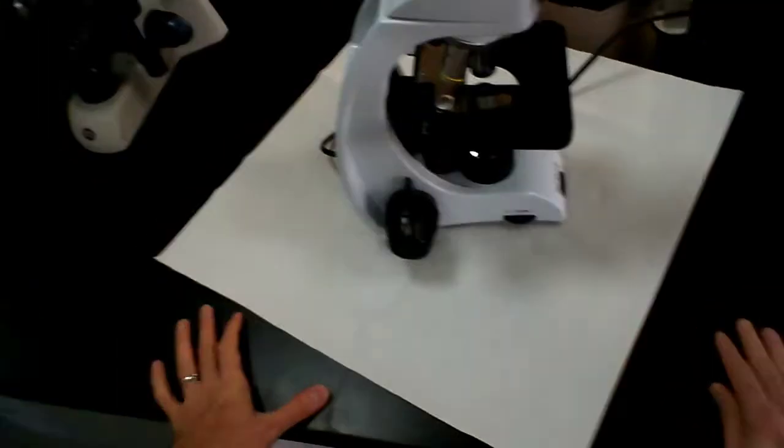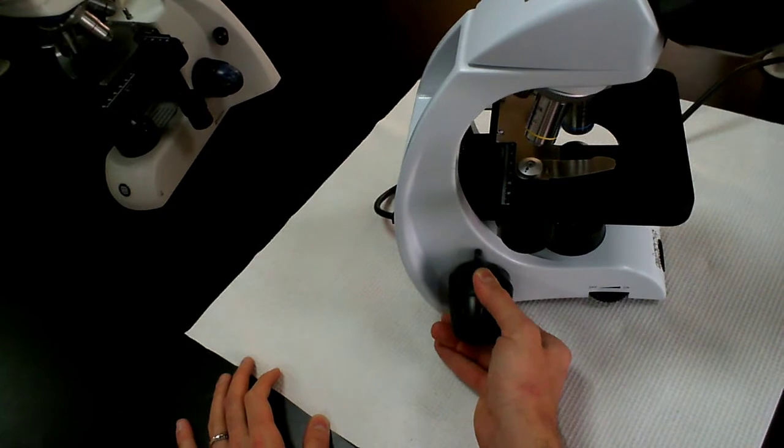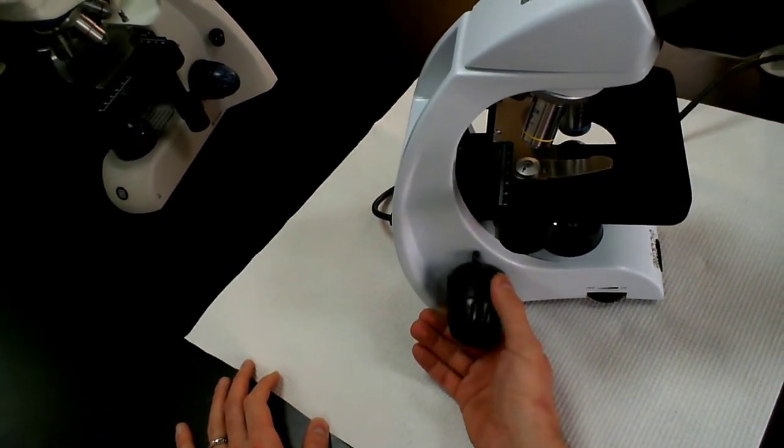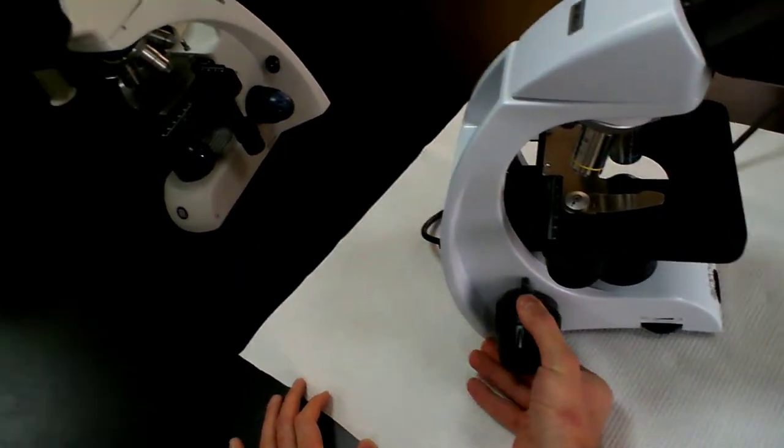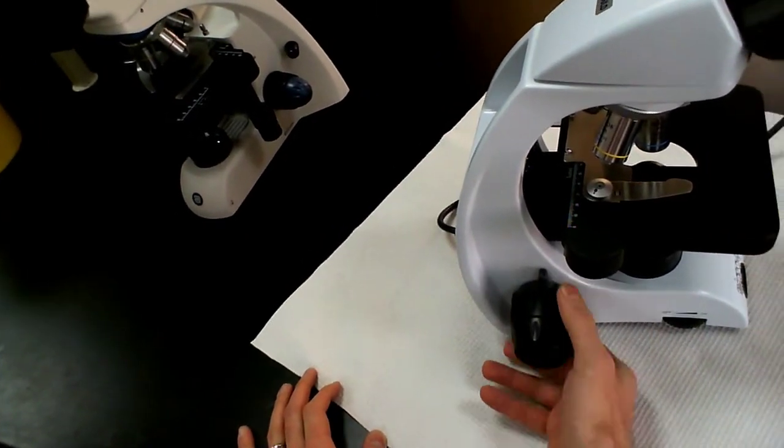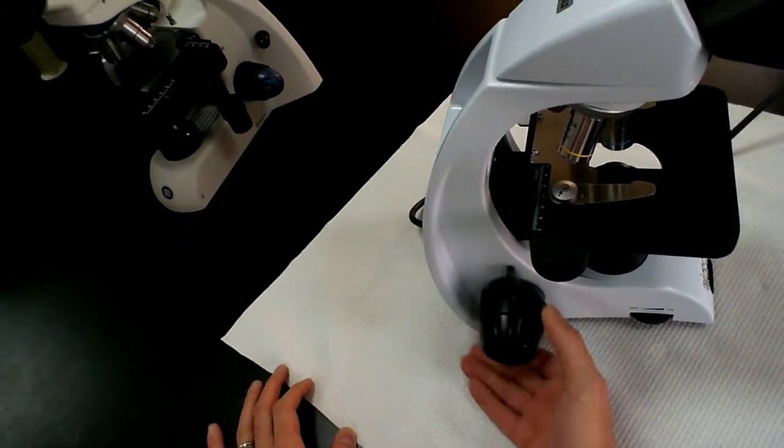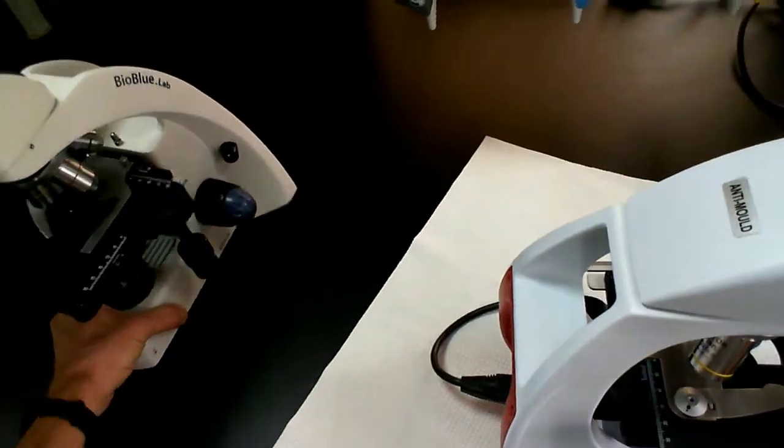Now the other thing that you will see at the base of this microscope here is that we have a control knob, which is a focusing knob. So you have a coarse focus and a fine focus knob here. Now both of these are black on this microscope, so it's probably very difficult for you guys to see this in the video. So let me show it to you on this one.